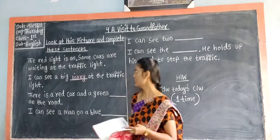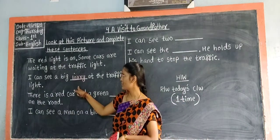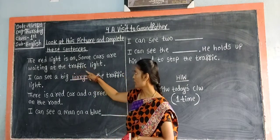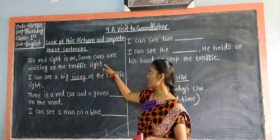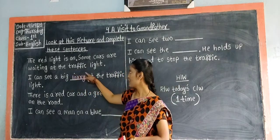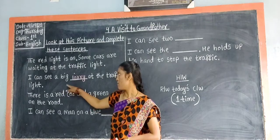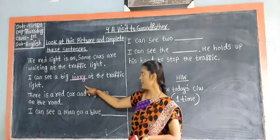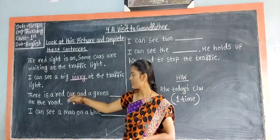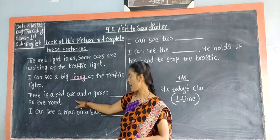Look at the board children. The first one is given as an example. 'The red light is on. Some cars are waiting at the traffic light. I can see a big lorry at the traffic light.' There is a red car...